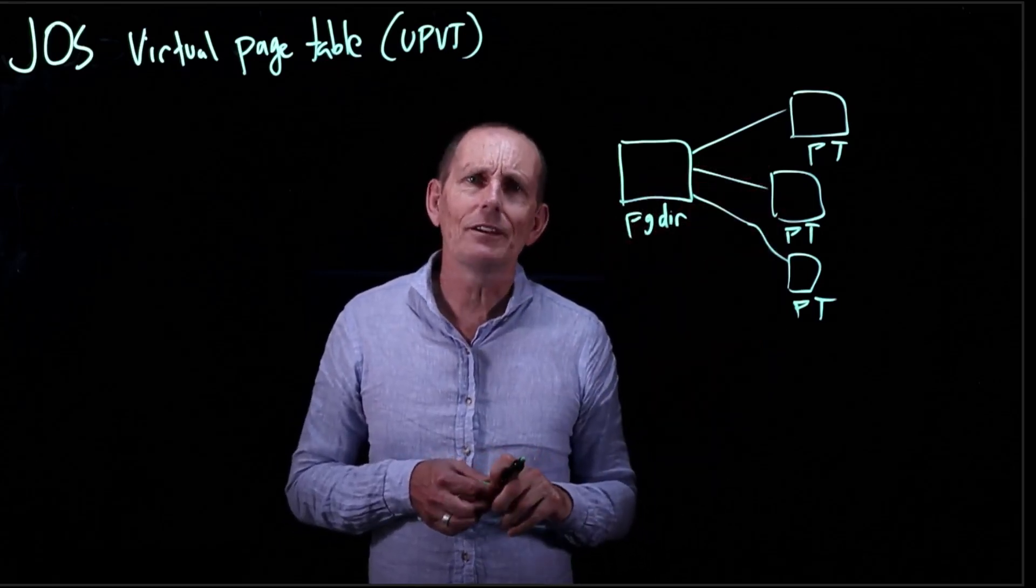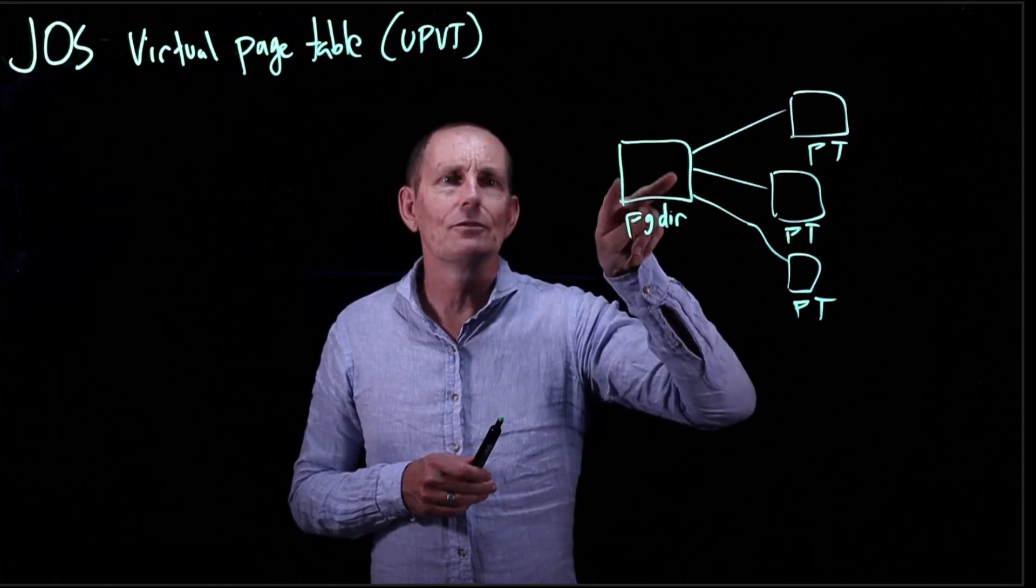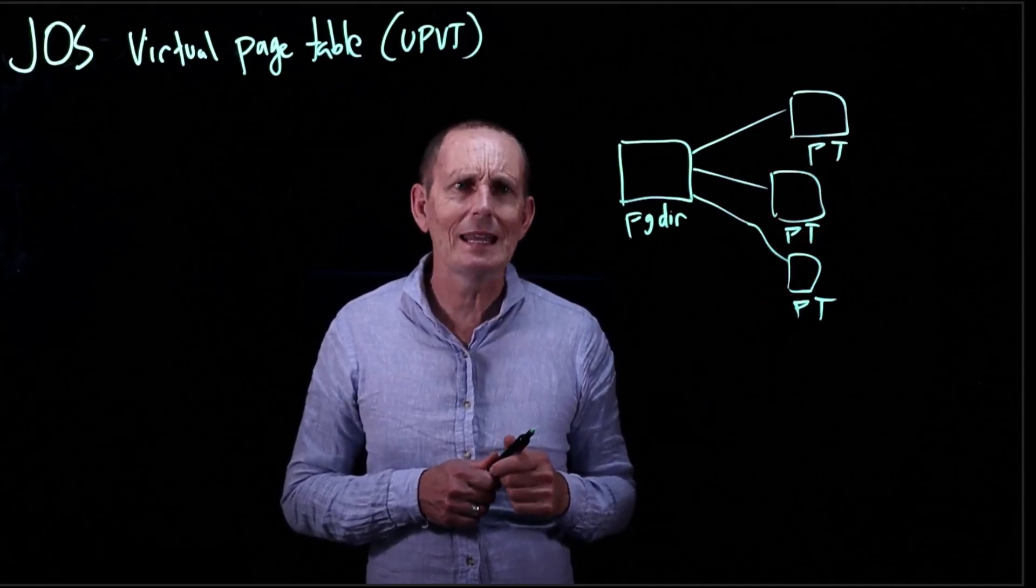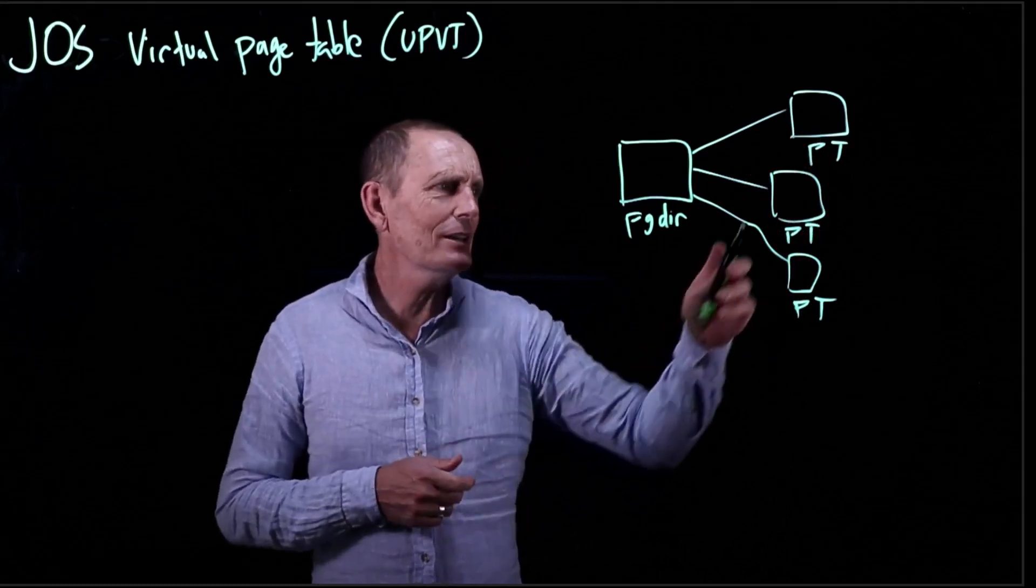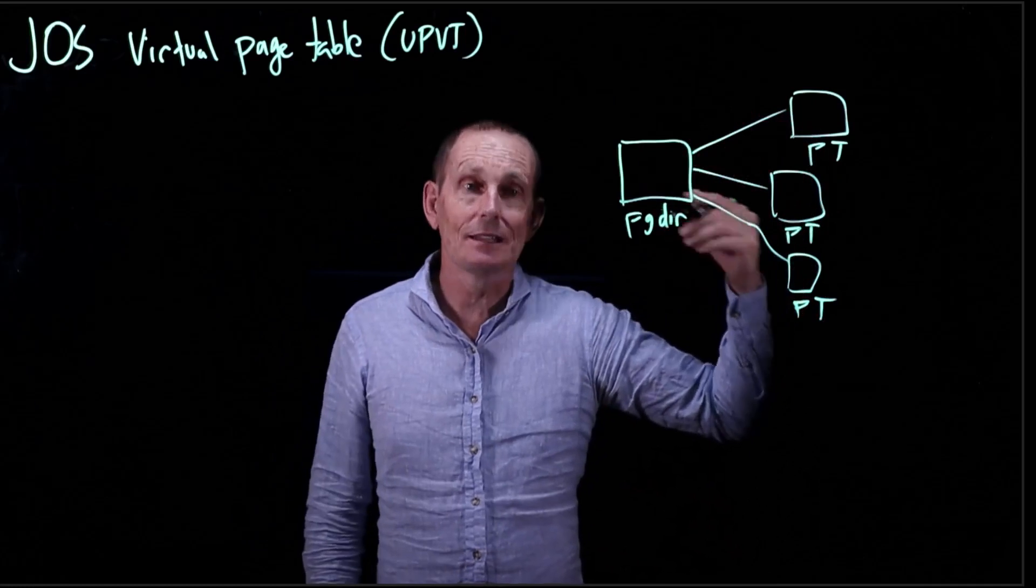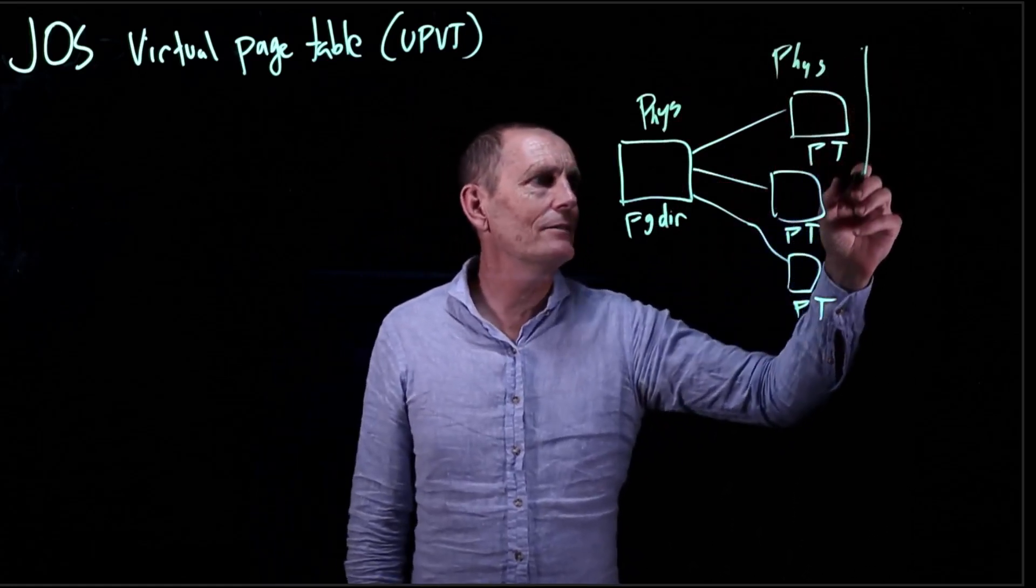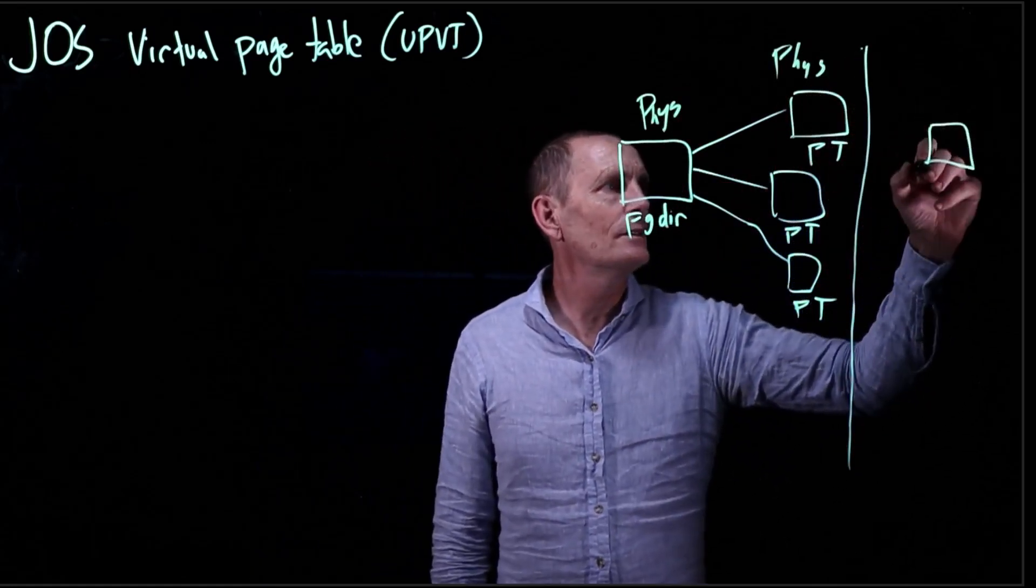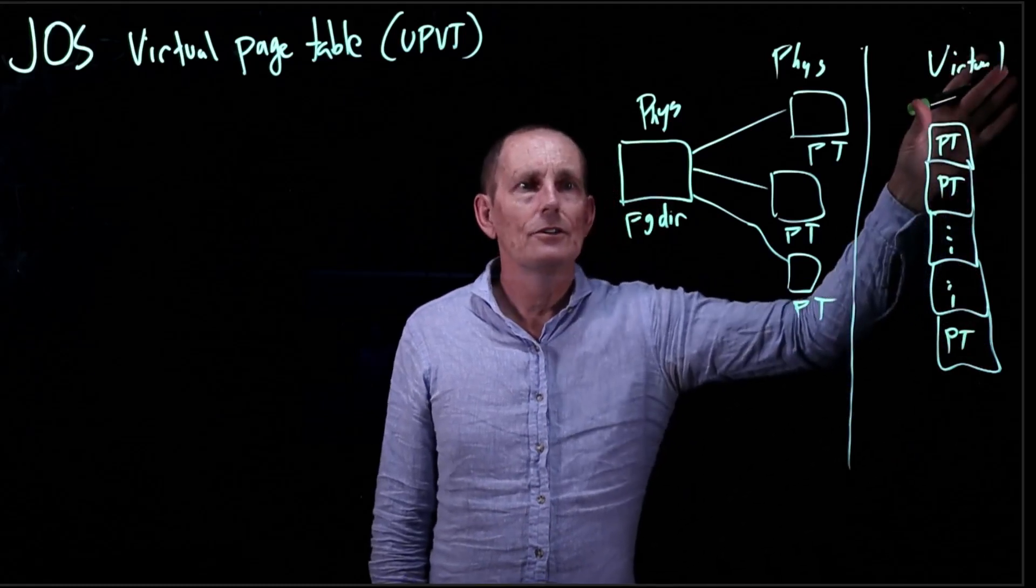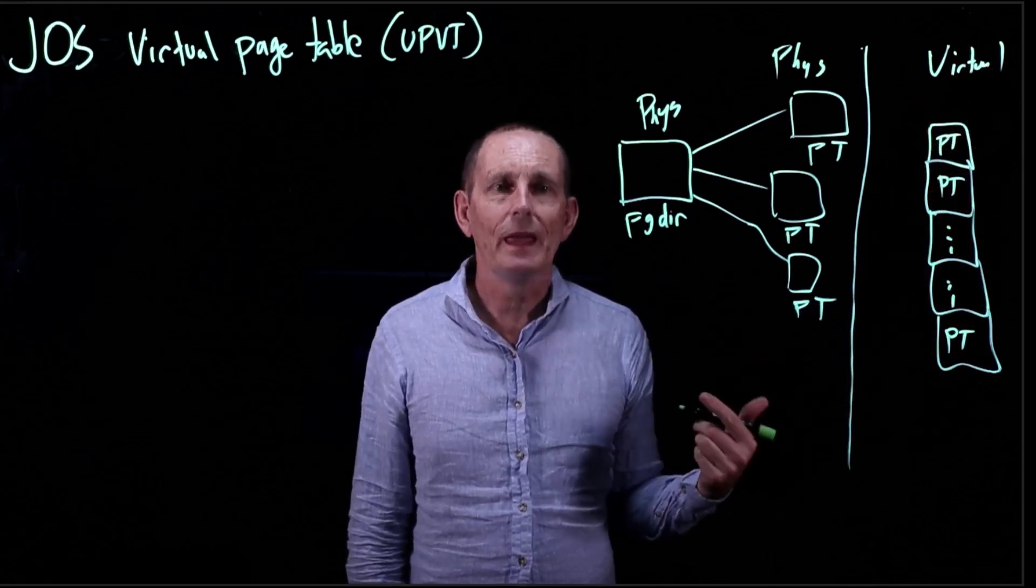But as we're using the kernel, often it would be handy if we had virtual addresses. So it would be nice if we had a virtual address that referred to the page directory, and it would also be nice if we had a virtual address for the page tables. And while we're at it, it would really be handy if we could somehow have these page tables consecutive in memory, at least in virtual space.